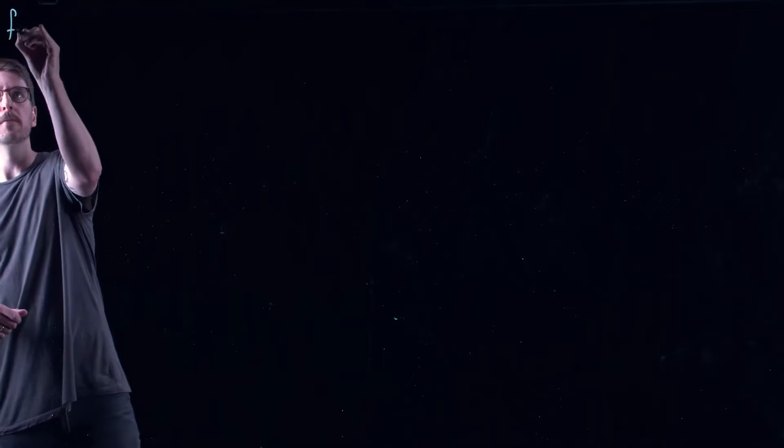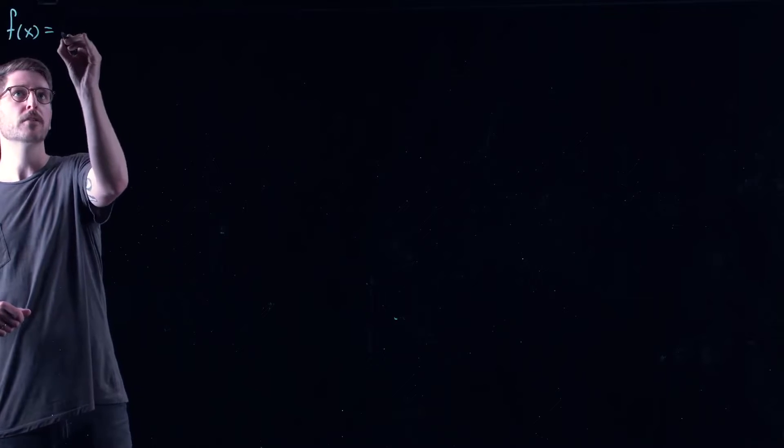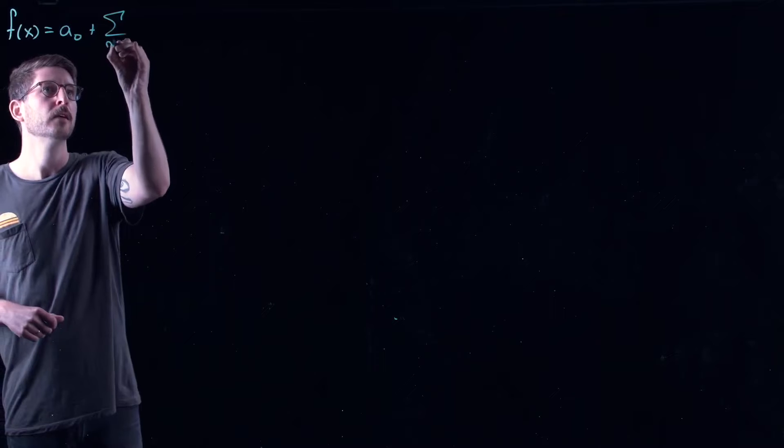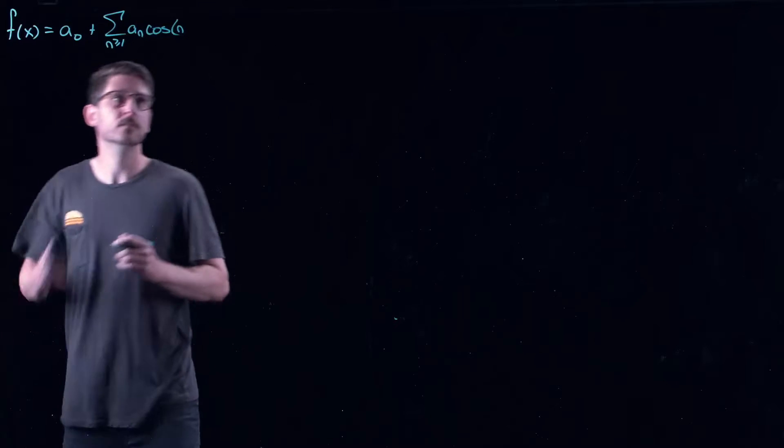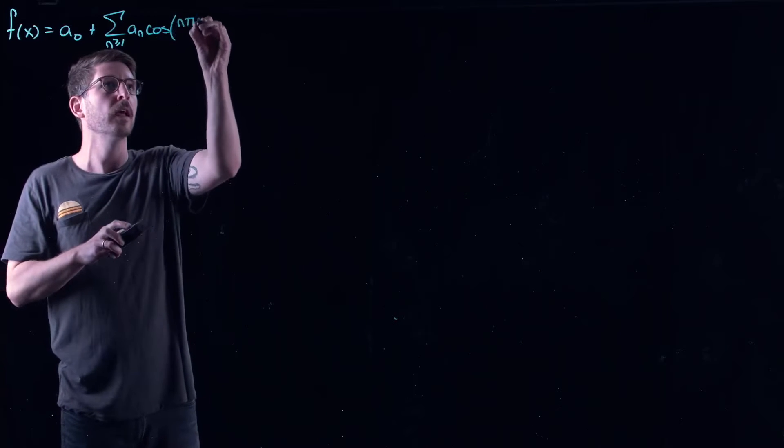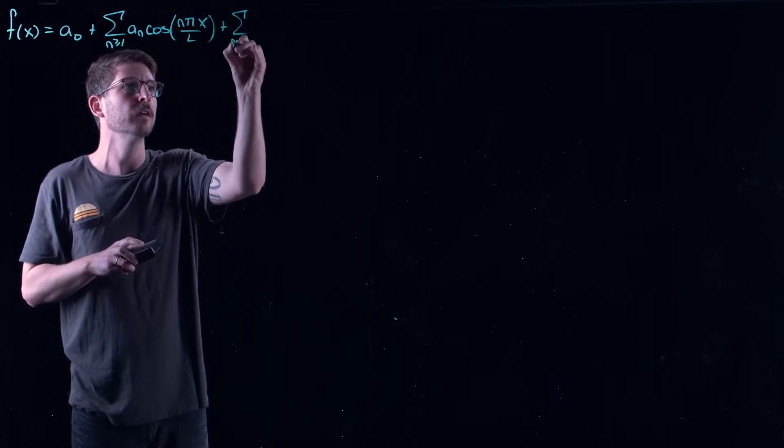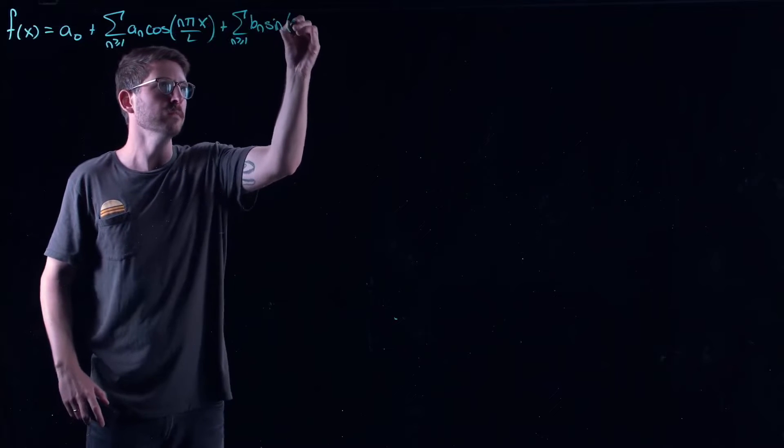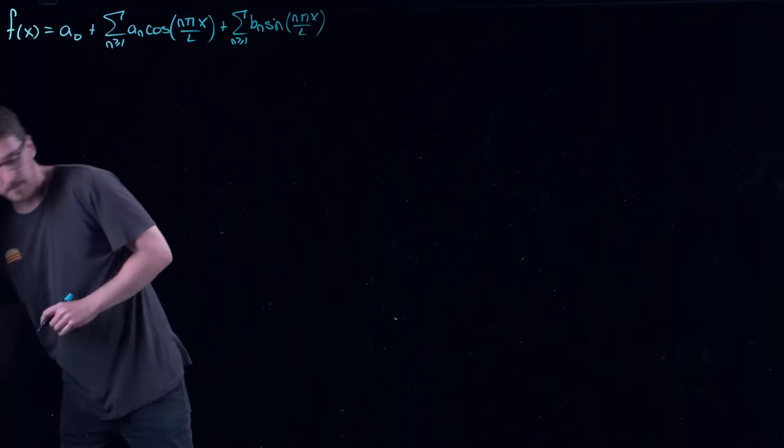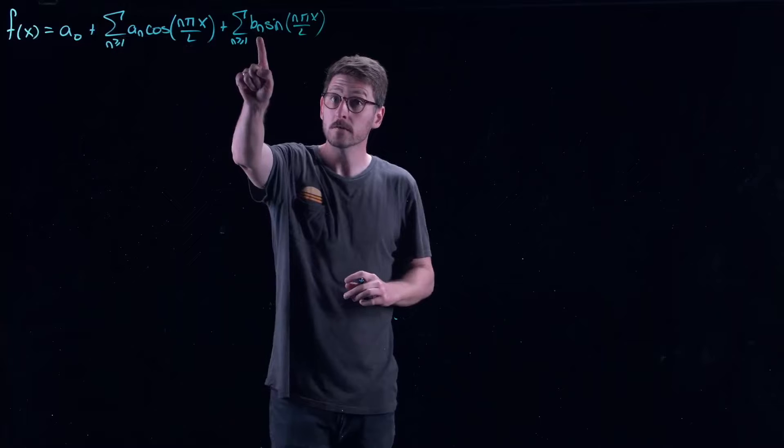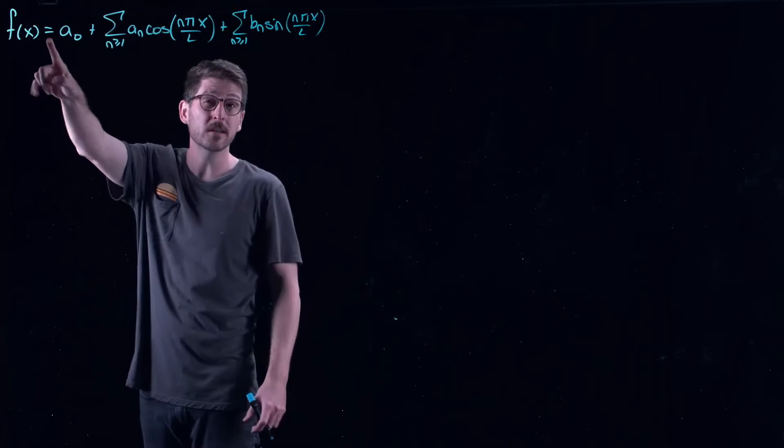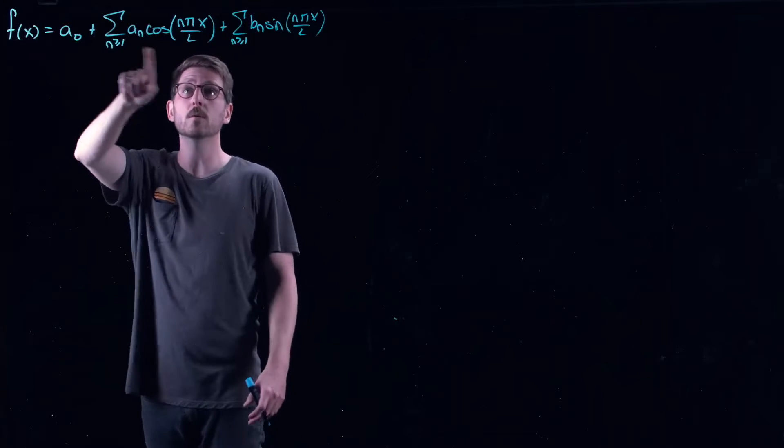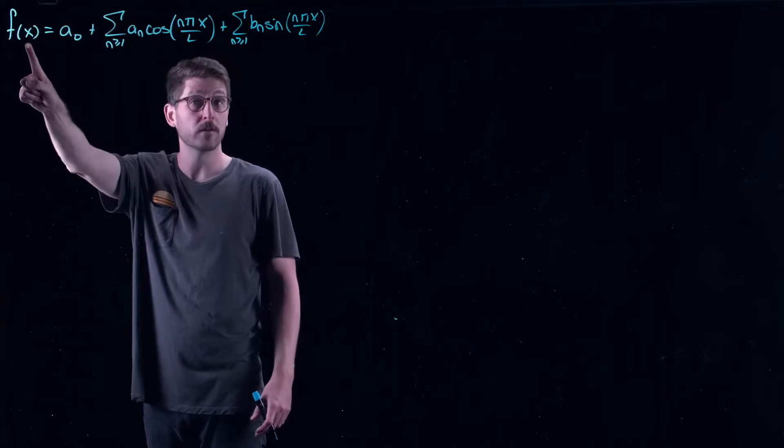I just want to start by reminding you, I kept writing f(x) equals a0 plus the sum n greater than or equal to 1, an cos(nπx/L) plus the sum n greater than or equal to 1, bn sin(nπx/L). This is what we would like to work with. We figured out how to find all the coefficients. But again, you have to be very careful with infinite series of functions. Saying equals here is a little bit finicky. It's only equal whenever the right hand side converges and it converges to the value of f(x).